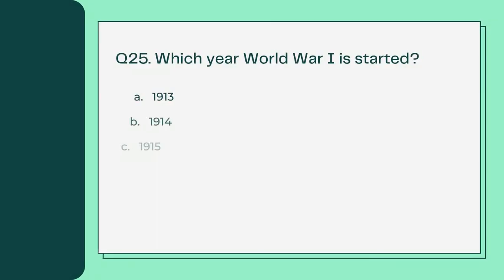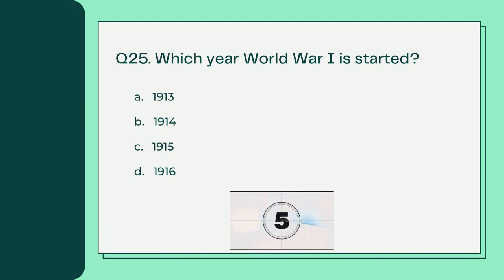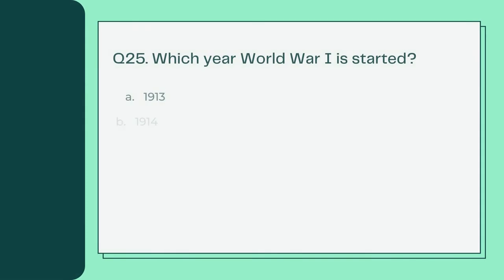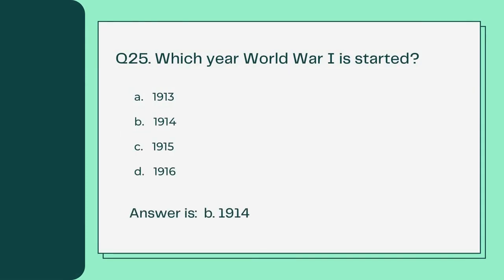Which year did World War 1 start? A. 1913 B. 1914 C. 1915 D. 1916. Answer is B. 1914.